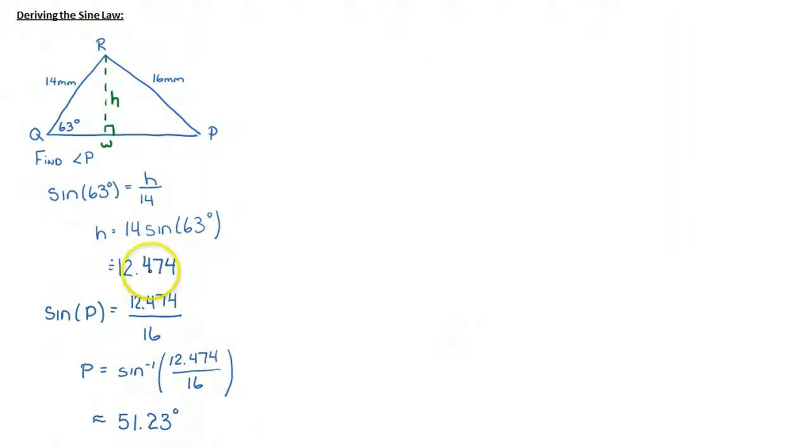Now, one thing to note here is that by rounding this step right here, we've introduced some error. So if I wanted to get a more exact value, I could say P is equal to sine inverse. And I can actually take 14 times sine of 63 degrees all over 16. And now if I substitute that in, I get 51.23 degrees. So the error there is nothing significant.